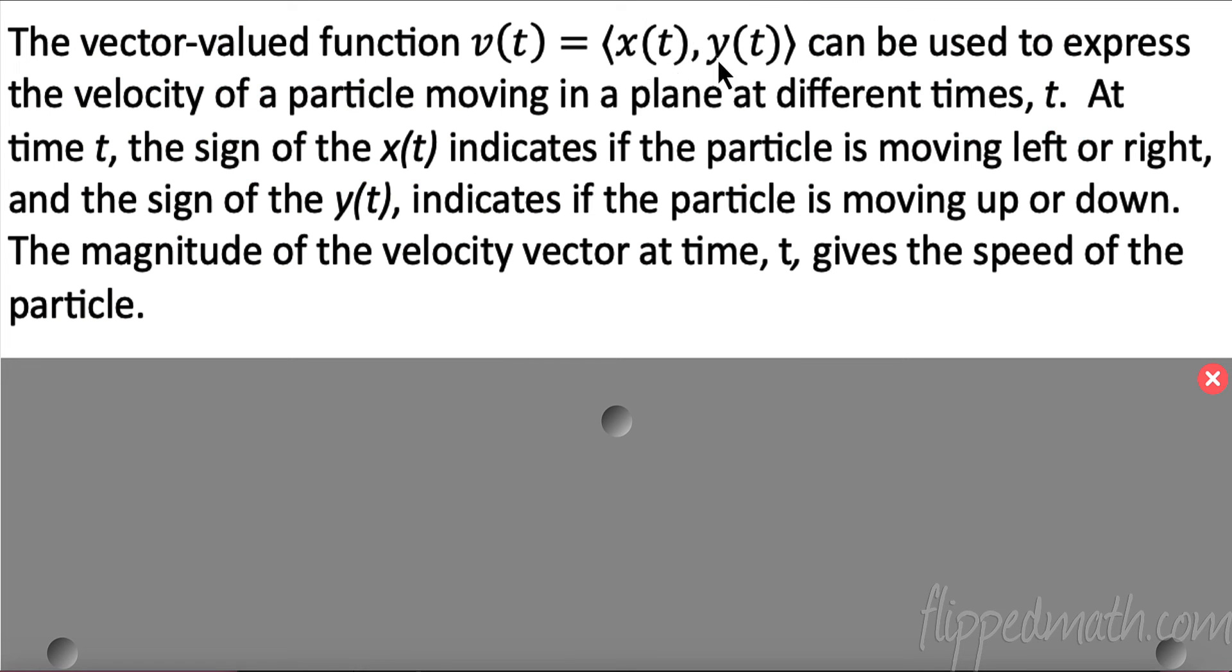The vector-valued function can also be used to express the velocity of a particle moving in a plane at different times. So this is a velocity vector. At time t, the sign of the x component indicates if the particle is moving left or right. So if we have a negative x component, it's moving left. If we have a positive x component, it's moving right. And the sign of y(t) indicates if the particle is moving up or down. So positive y component, it's moving up. Negative y component, it's moving down. The magnitude of the velocity vector gives us the speed of the particle. So let's take a look at one.